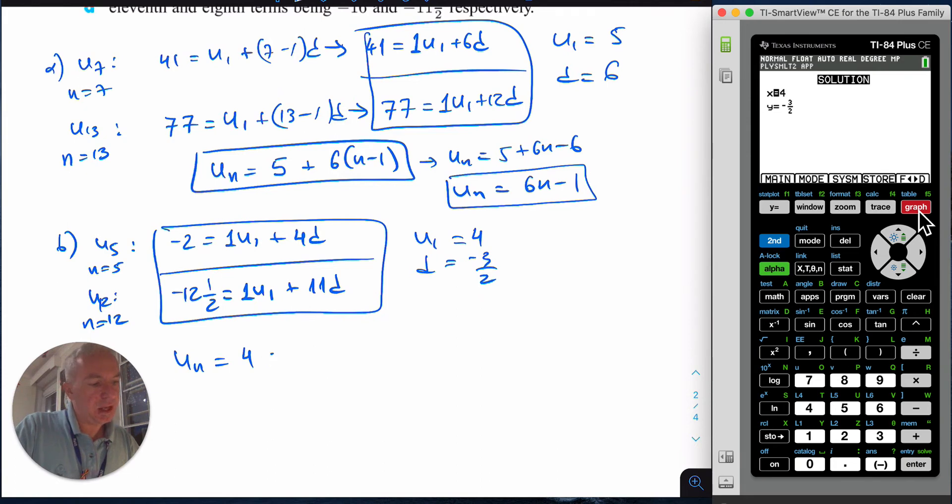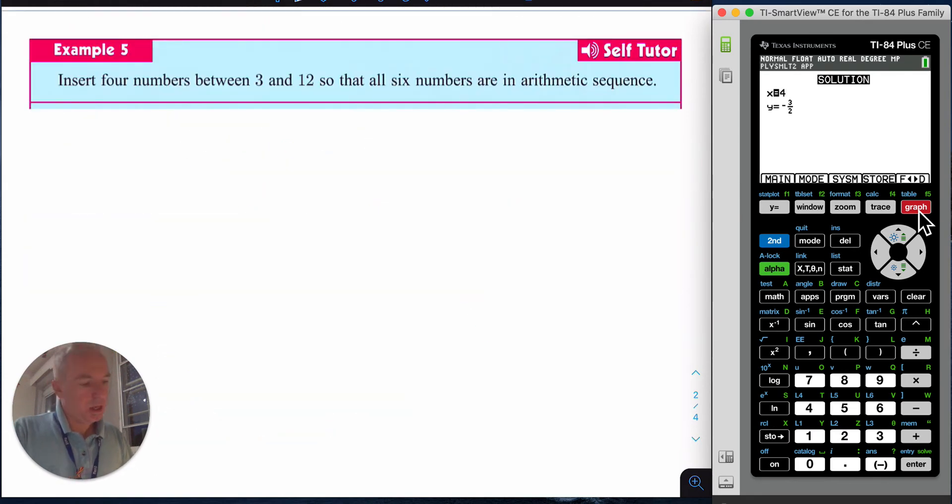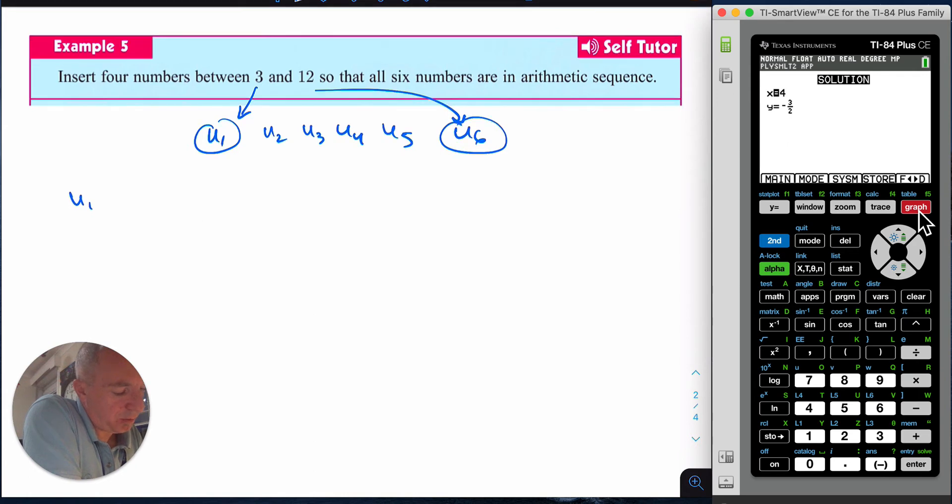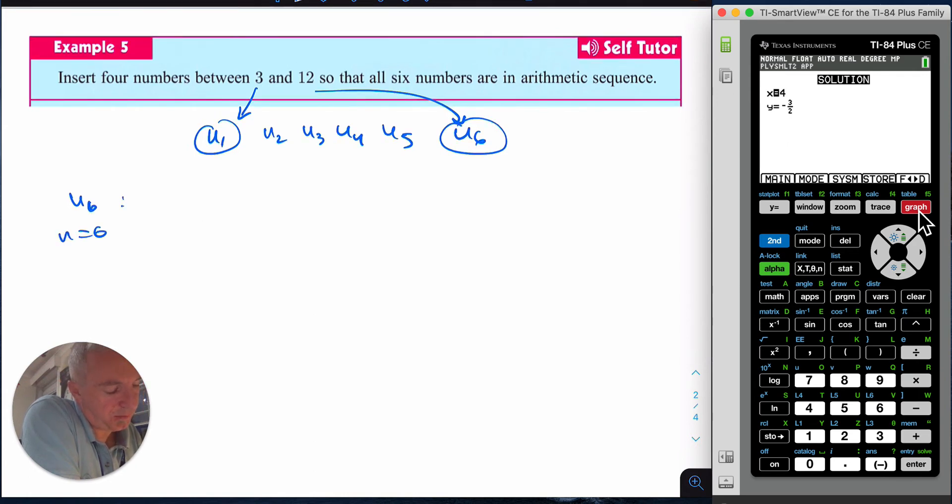Let's do one more. It says insert four numbers between 3 and 12, so that could be my u1. I have u2, u3, u4, u5, and this is u6. So I have u1 and u6. For u6 where n equals 6, I get u6 which is 12 = u1 which is 3 + (6-1)d, so 12 = 3 + 5d.